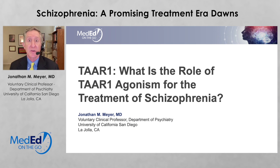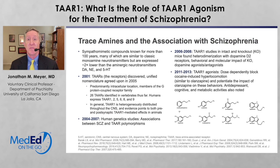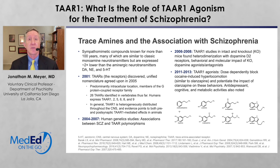This is Dr. Jonathan Meyer, voluntary clinical professor of psychiatry at the University of California San Diego, talking about TAAR1 and what is the role of TAAR1 agonism for the treatment of schizophrenia. TAAR1 refers to a receptor specifically for trace amines — chemicals which look very similar to traditional monoamine neurotransmitters, expressed at much lower levels, and whose receptors are predominantly intracellular. In this complex family of receptors, TAAR1 has emerged as a risk gene for schizophrenia.